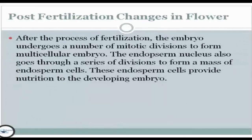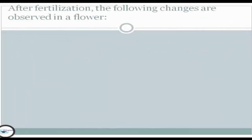Post-fertilization changes in flowers: after the process of fertilization, the embryo undergoes a number of mitotic divisions to form a multicellular embryo. The endosperm nucleus also goes through a series of divisions to form a mass of endosperm cells, which provide nutrition to the developing embryo. After fertilization, the following changes are observed in a flower.